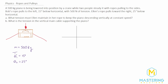Bob's rope is pulling with 500 newtons of tension, so tension one for Bob's rope is 500 newtons. For part A we need to figure out how much tension Ellen needs in her rope to keep the piano descending vertically at a constant speed. For part B we need to figure out what the tension is in the vertical main cable supporting the piano. I always like to do a free body diagram first to better visualize what's happening.